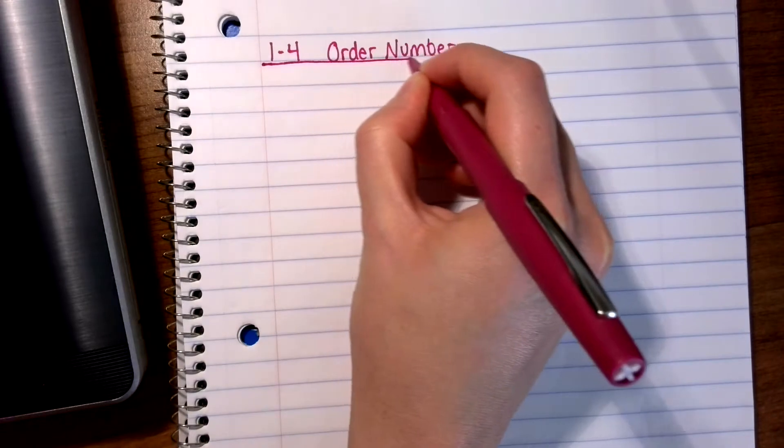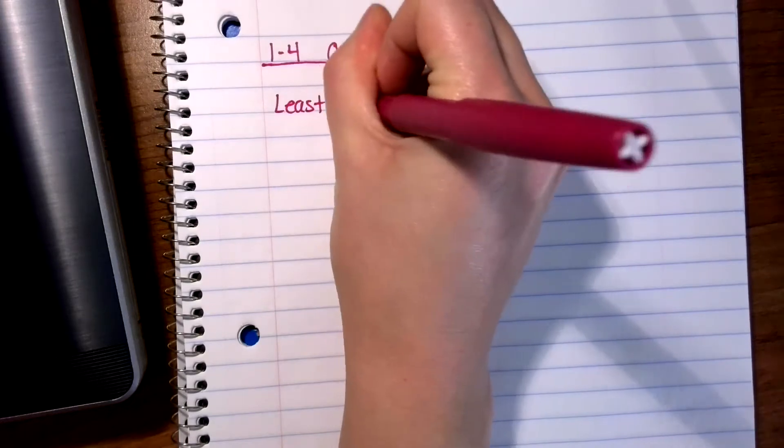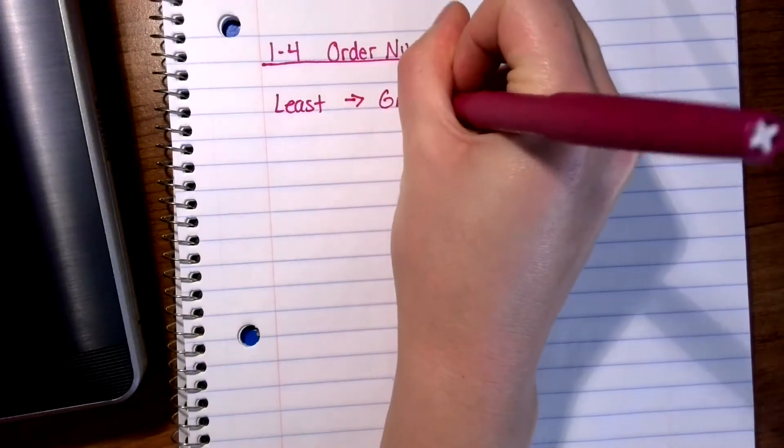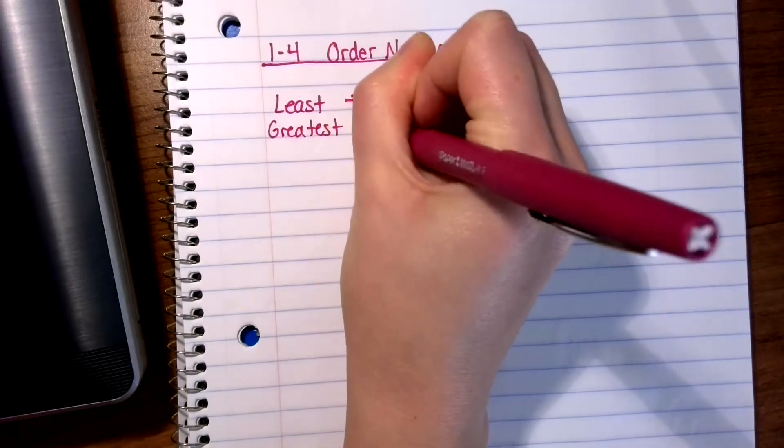This is the fourth lesson in chapter one titled Order Numbers. So we're going to look at how do we take a lot of big numbers and put them in order either from least to greatest or from greatest to least.